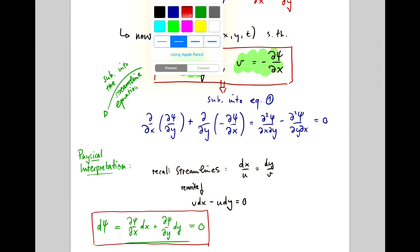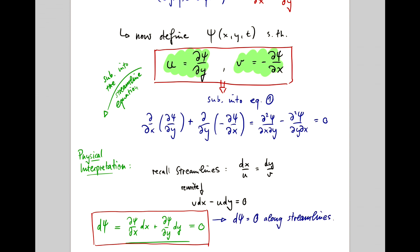So, what that means is that as long as we're on the streamline, dps is zero. In other words, streamlines are contours of the stream function.